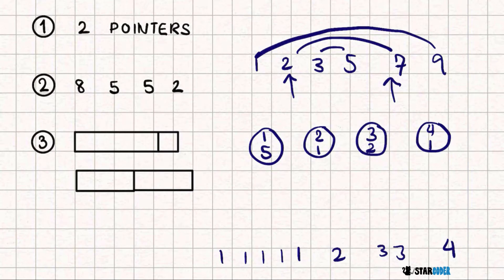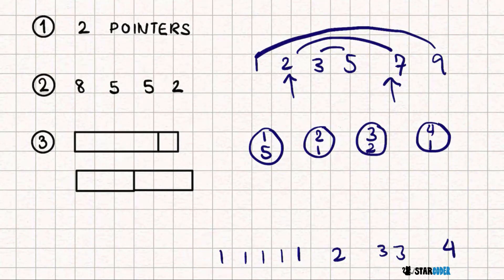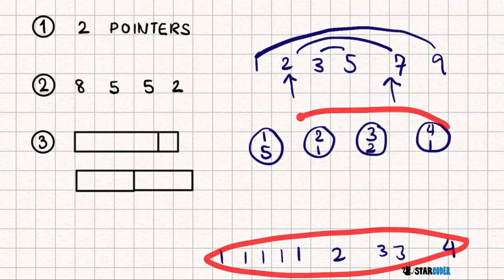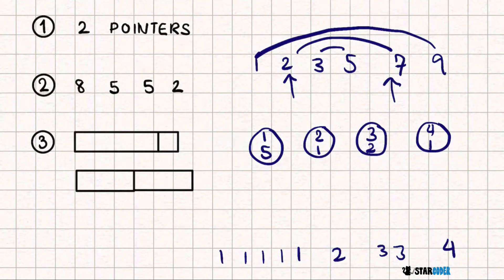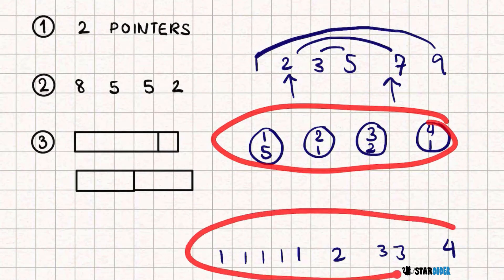But what about duplicates? With duplicates, we have a list with a bunch of ones, twos, threes. This is equivalent to a compressed representation where each circle contains two values: the cow time and the number of cows with that value. So this array is the same as the expanded array.